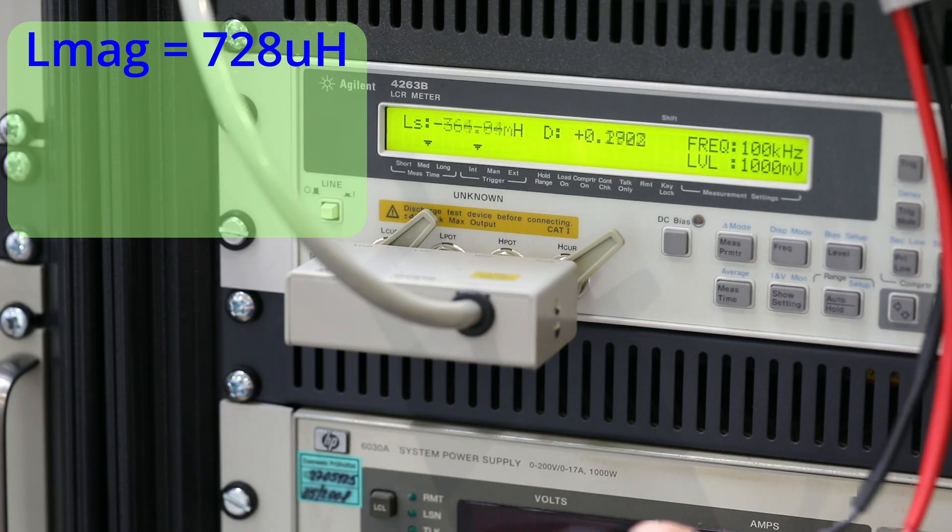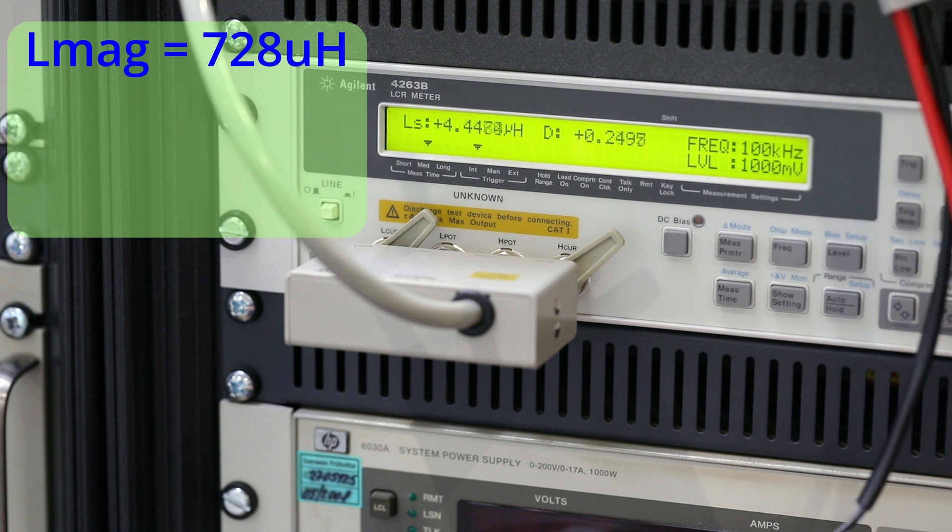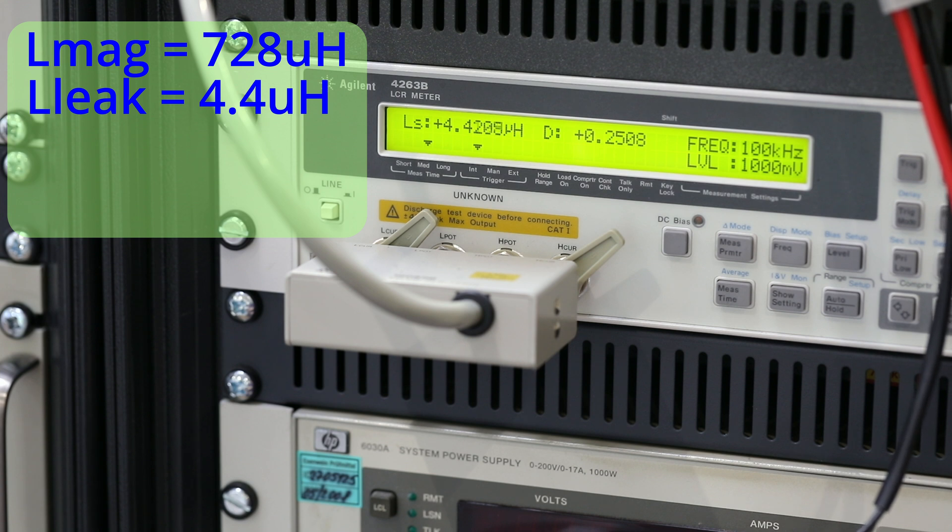Using the impedance bridge we measure the primary reference leakage inductance as 4.4 microhenries, which is great since it is tiny in comparison to the magnetising inductance. The split primary approach is helping us here. Note the measurement frequency of 100 kilohertz.